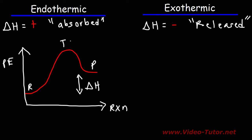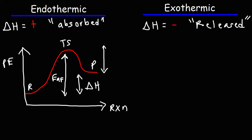At the top of the diagram, this is known as the transition state. In order for the reaction to proceed, the reactants need to acquire enough energy to reach the transition state. The difference between the energy of the transition state and the reactants is known as the forward activation energy. The amount of energy needed has to be equal to or greater than the forward activation energy.